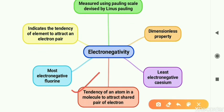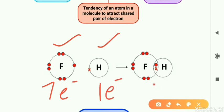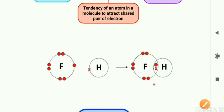Let us begin with electronegativity. The definition: electronegativity is the tendency of an atom in a molecule to attract a shared pair of electrons. Here two atoms are given — hydrogen and fluorine. Fluorine has seven valence electrons and hydrogen has one valence electron. They will share their valence electrons, resulting in a shared pair of electrons. This sharing of electrons will be dealt with in more detail in chapter two on chemical bonding.